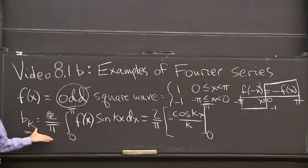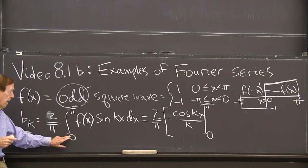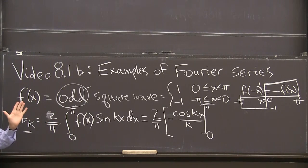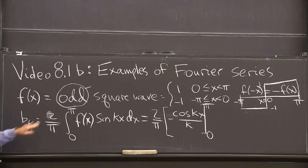And here was the formula from last time for the coefficients b_k. Except I have now, I'm only integrating over half, over the 0 to pi part of the interval. So I double it.